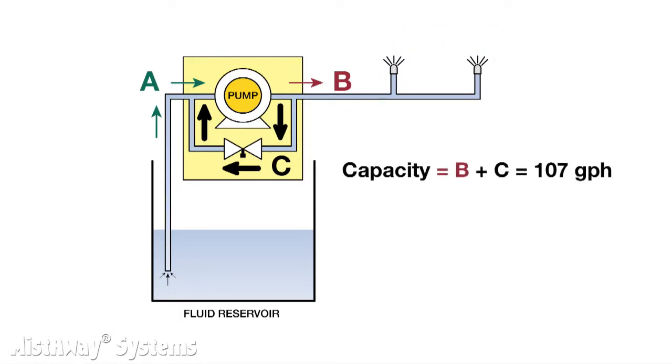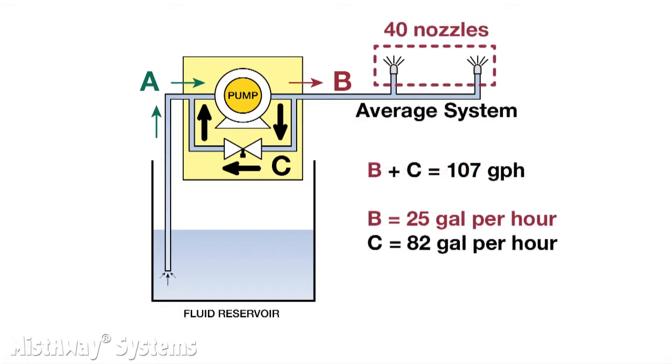Our standard pump is always pumping 107 gallons per hour. Whatever doesn't go out through the nozzle circuit gets sent back through the bypass. An average residential system has about 40 nozzles, which translates to about 25 gallons per hour of flow through the nozzle circuit. That means 82 gallons per hour is being recirculated during a mist cycle. So you can see there's a lot of extra capacity.